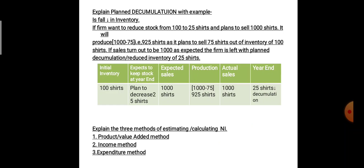It plans to sell 1000 shirts as usual. It will produce 1000 minus 75 shirts because it wants to reduce the stock to only 25 shirts. So it is going to produce 75 shirts less — that is, it will produce only 925 shirts — as it plans to sell 75 shirts out of the inventory of 100 shirts. If sales turn out to be 1000 as expected, the firm is left with a planned decumulation or reduced inventory of 25 shirts.